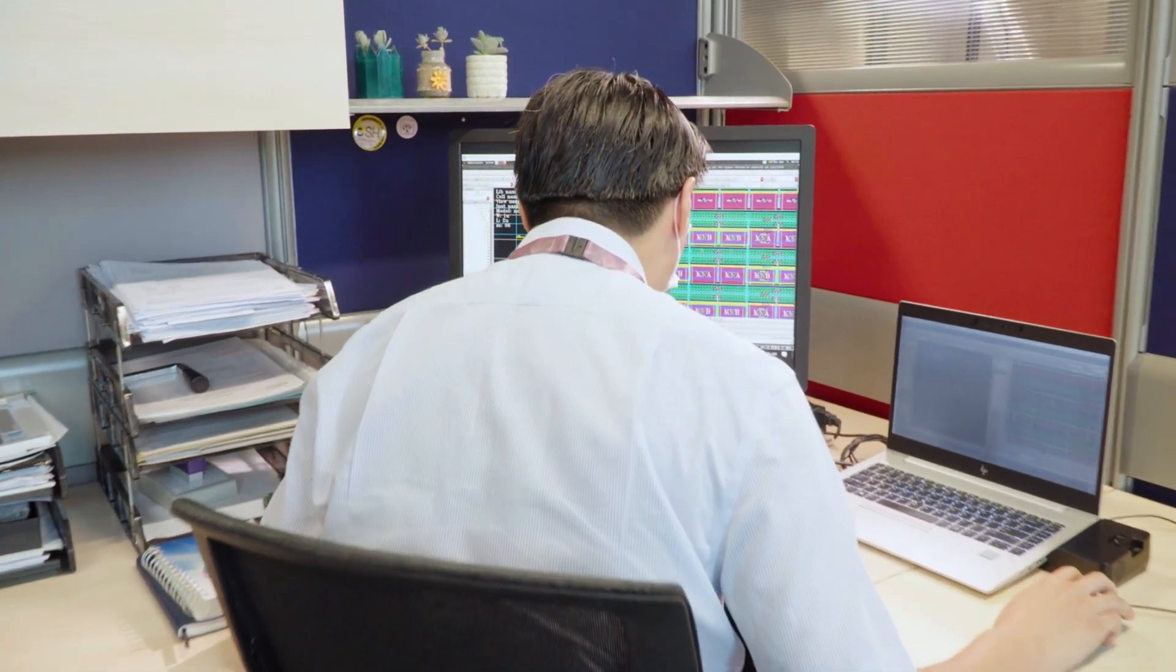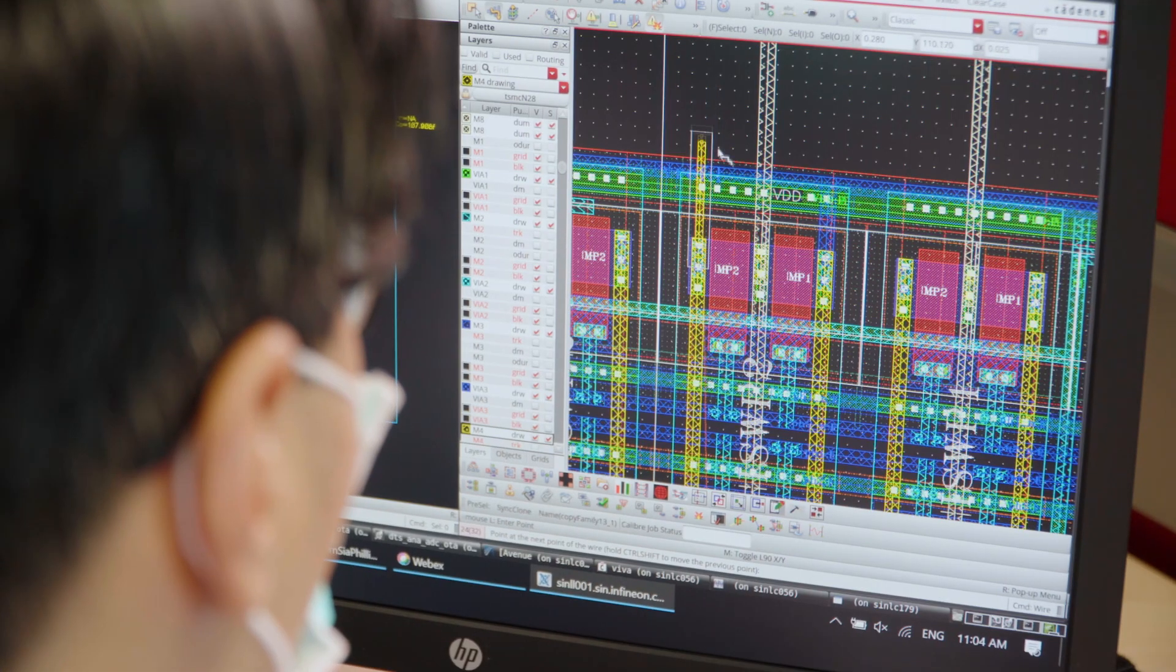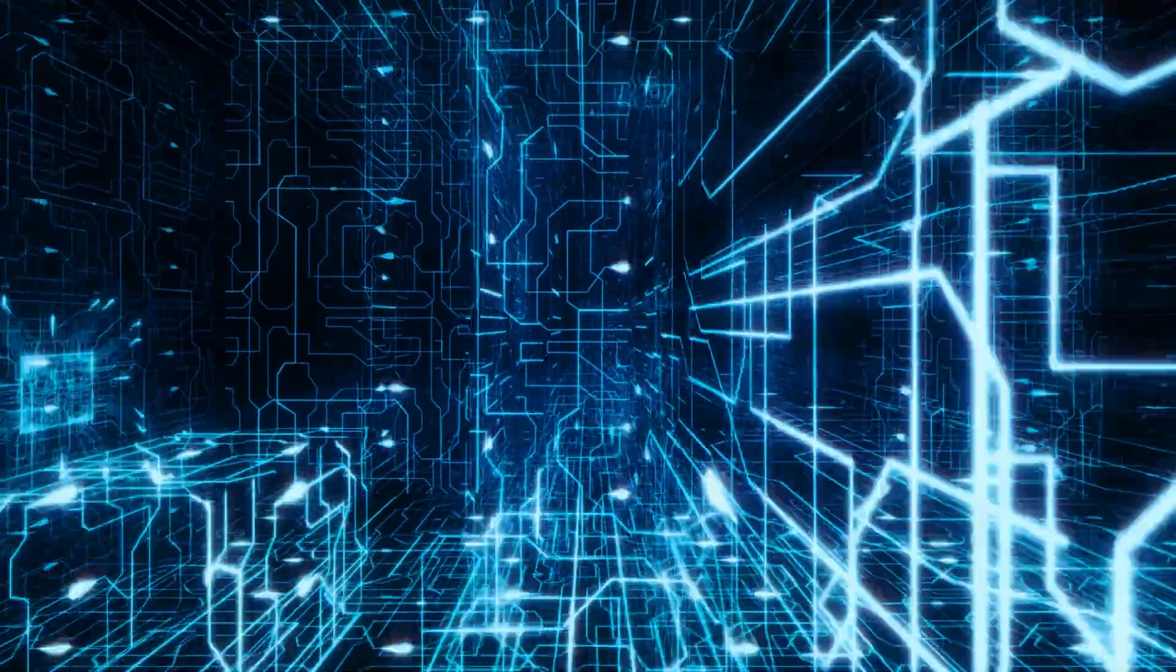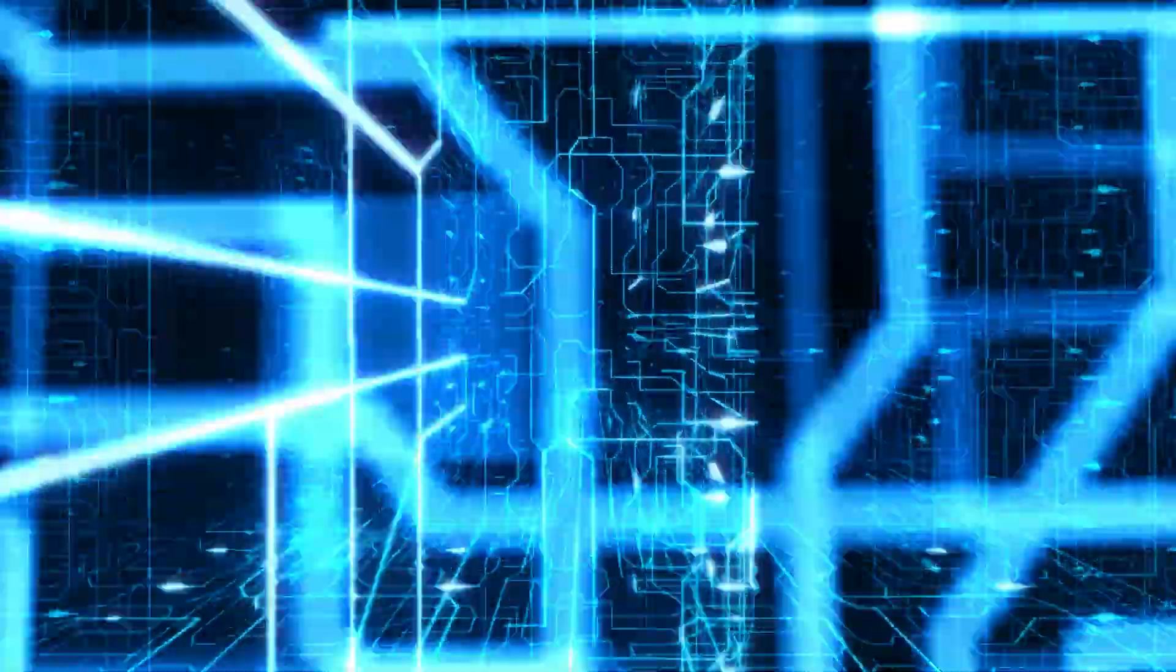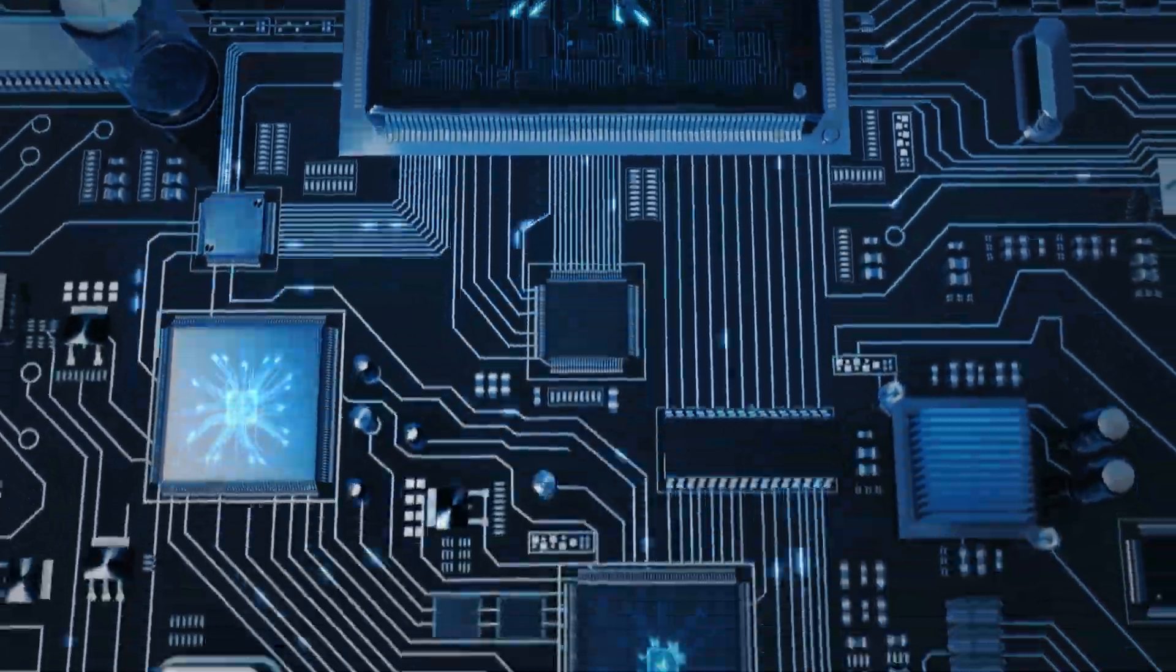A typical project in a development center begins after the business case and the system concept have been decided. The project kicks off with a design and layout. This stage covers design entry, functional simulation, design optimization to physical implementation.